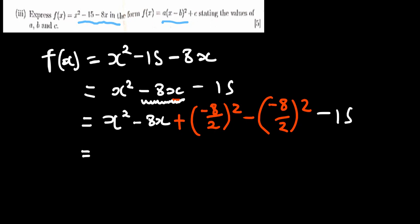So what are we going to have here? We're going to have x squared minus 8x, and then this would be plus. Then inside there to just be minus 4 squared minus. Even there to be minus 4 squared and then minus 15.